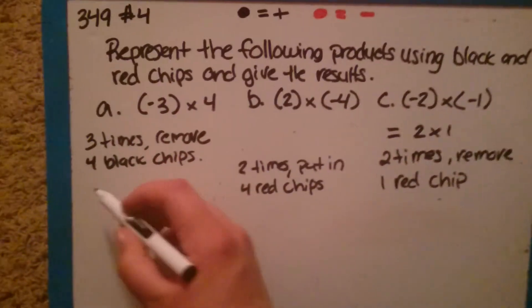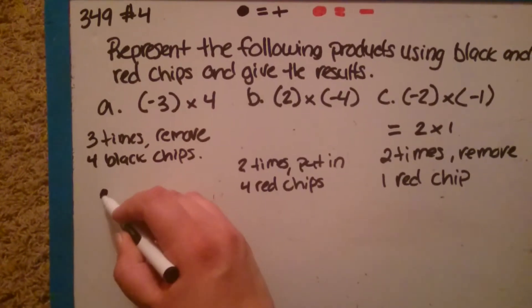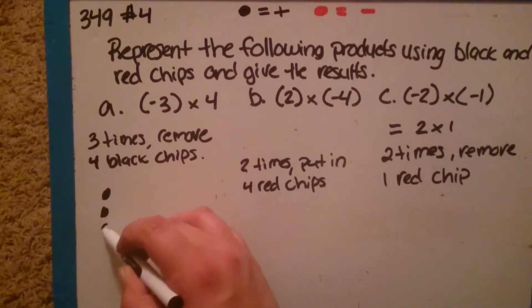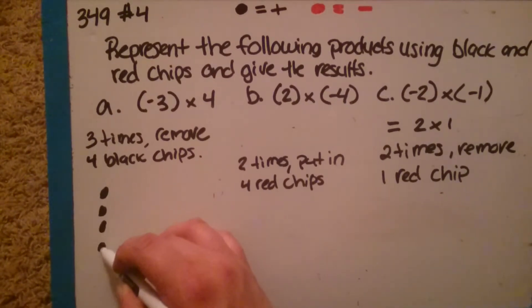Add in 0 pairs. We'll do 4 black chips 3 different times, so we're doing 3 groups of 4.